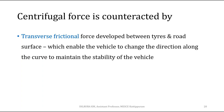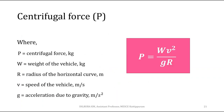Centrifugal force is counteracted by transverse frictional force developed between the vehicular tire and the pavement. When centrifugal force tries to pull the vehicle outward, frictional force developed between the tire and pavement surface tries to counteract it and prevent the vehicle from going outward. This is why we are able to change direction and maintain the stability of the vehicle in a circular curve.